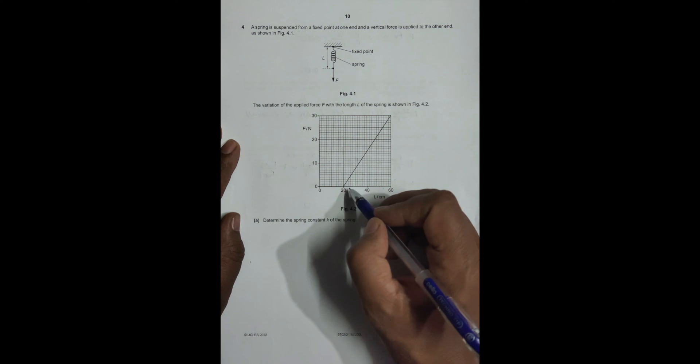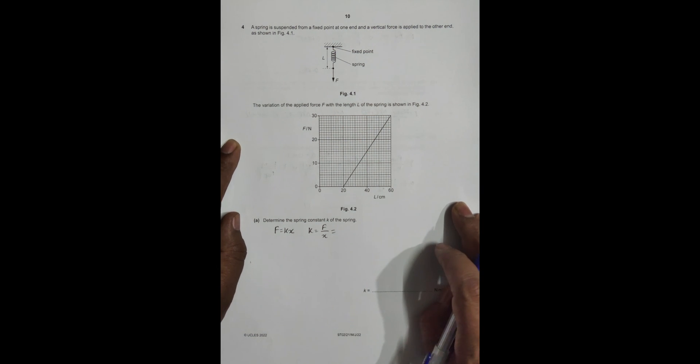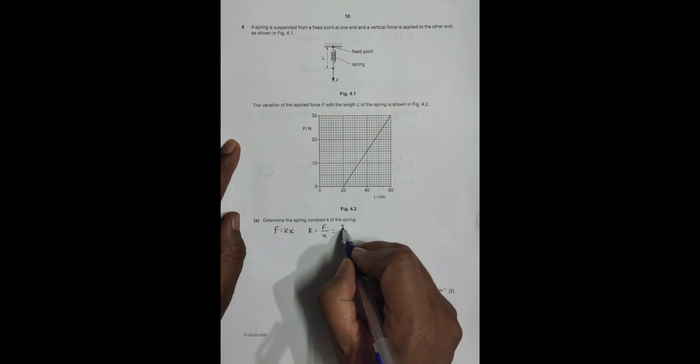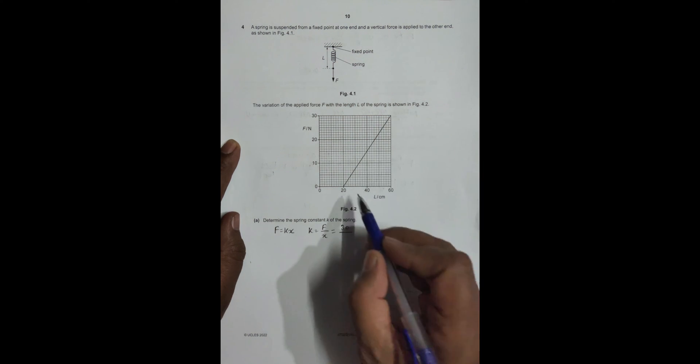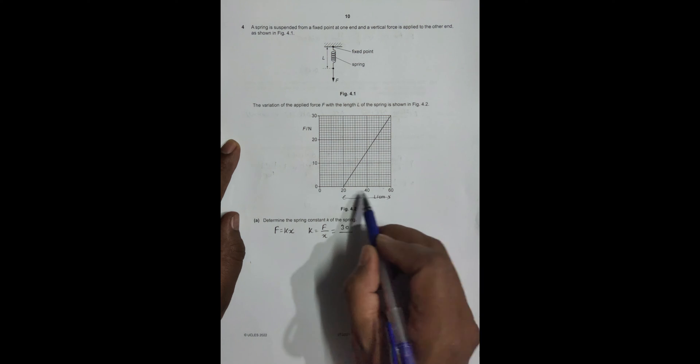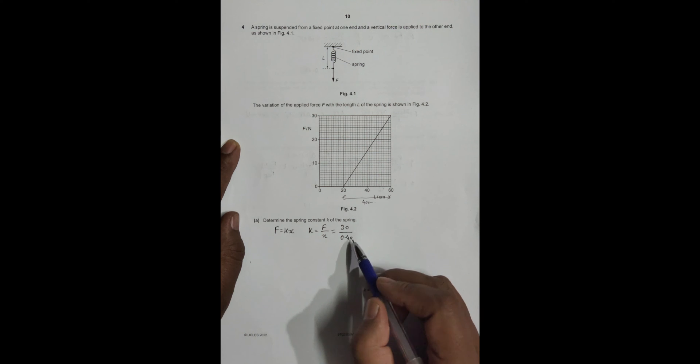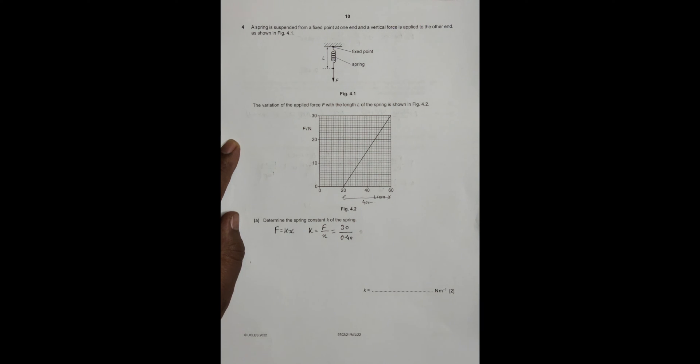Determine the spring constant k of the spring. So F equals kx, where x is the extension. So k equals force applied divided by extension. Let's take 30 newtons as a reference. At 30 newtons, the extension is from 20 to 60 cm, so altogether 40 centimeters, which is 0.40 meters. So when I do this division, 30 divided by 0.40 equals 75. So it is 75 newtons per meter.